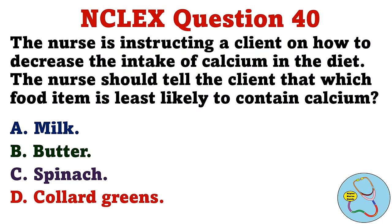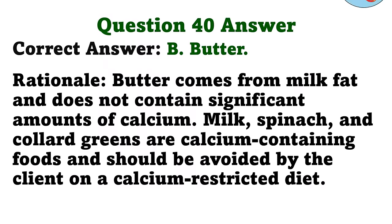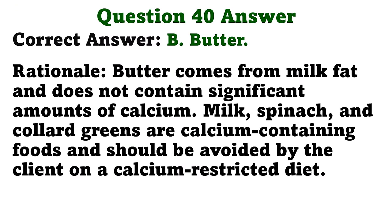The nurse is instructing a client on how to decrease the intake of calcium in the diet. The nurse should tell the client that which food item is least likely to contain calcium? A. Milk. B. Butter. C. Spinach. D. Collard greens. The correct answer is B: butter. Butter comes from milk fat and does not contain significant amounts of calcium. Milk, spinach, and collard greens are calcium-containing foods and should be avoided by the client on a calcium-restricted diet.